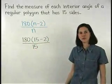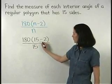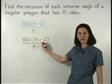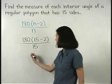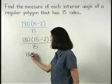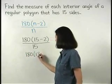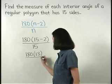And simplifying across the top, 15 minus 2 is 13, so we have 180 times 13 over 15.